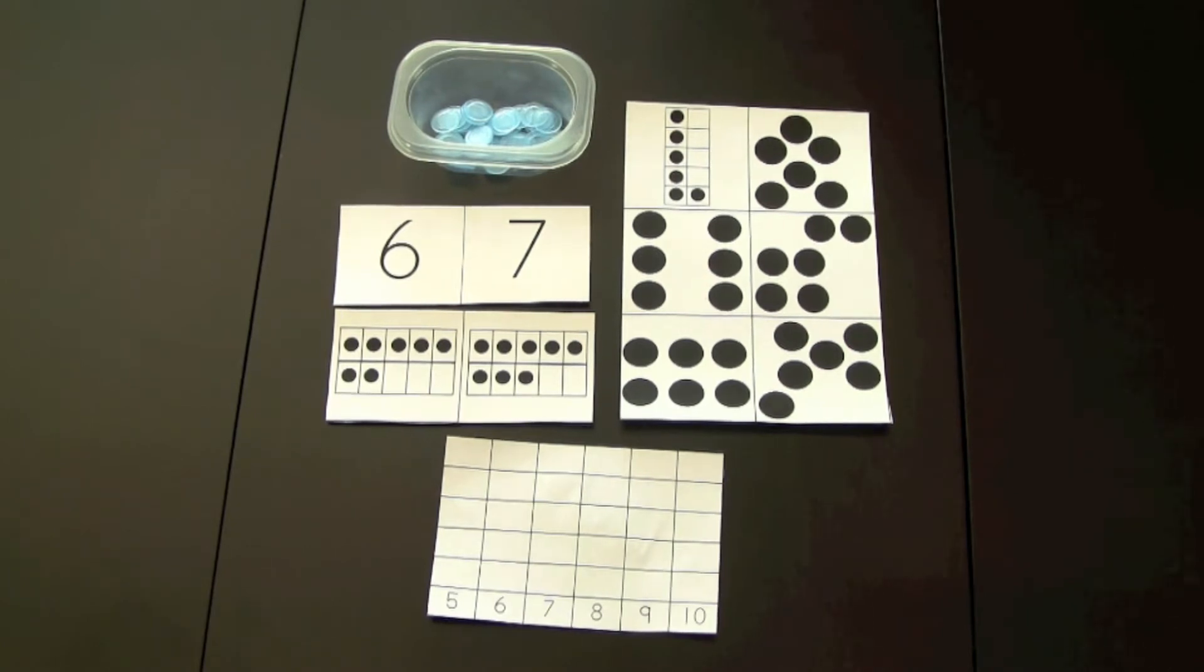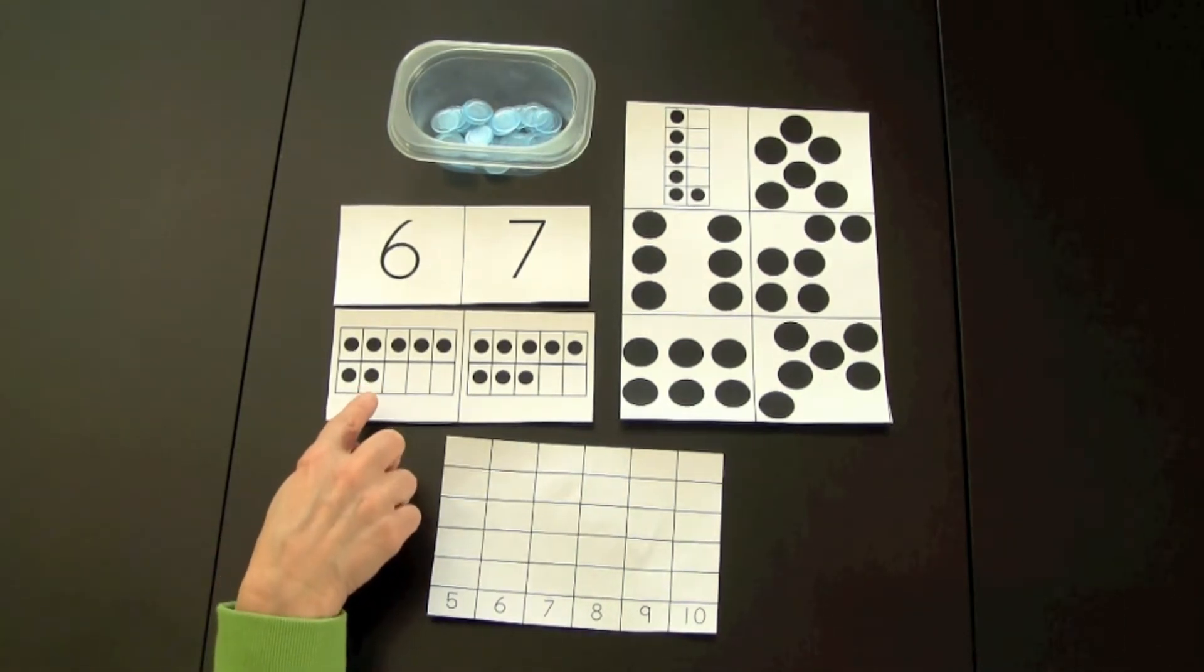The cards would be cut and placed upside down. Each player would take a turn choosing a card. For example, if they chose the 10 frame 7...